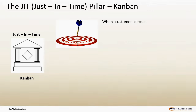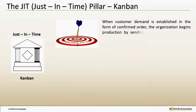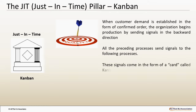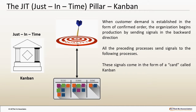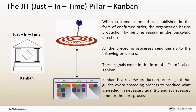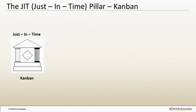When customer demand is established in the form of a confirmed order, the organization begins production by sending signals in the backward direction. All the preceding processes send signals to the following processes. These signals come in the form of a card called Kanban. Kanban is a Japanese word meaning sign board. Kanban is a reverse production order signal that guides every preceding process to produce what is needed in the necessary quantity and at the necessary time for the next process.